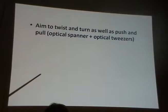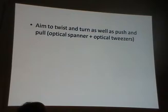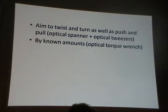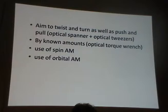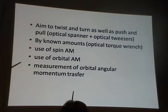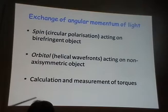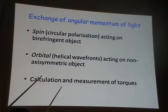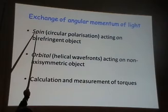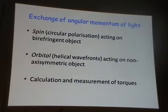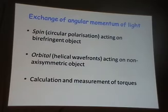I want to twist and turn as well as push and pull — to have an optical spanner and optical tweezers — with a known amount of torque. I want to use spin angular momentum or orbital angular momentum, and then measure the orbital angular momentum transfer. The exchange of angular momentum of light comes in terms of circularly polarized light, which carries spin angular momentum, and the wavefront helicity, which carries orbital angular momentum. Each photon in circularly polarized light carries plus or minus ℏ of spin angular momentum.